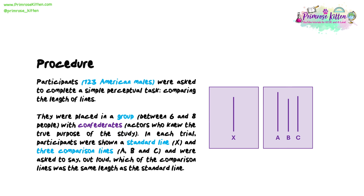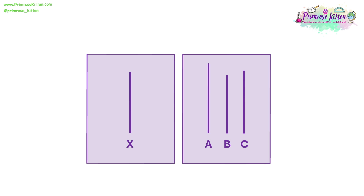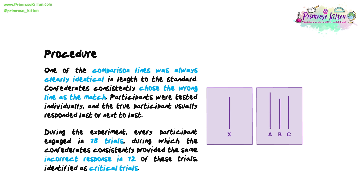and were asked to say out loud which of the comparison lines was the same length as the standard line. We can see here examples of the two cards that the participants were shown — on the left, X, the standard line, and on the second card shown here on the right-hand side, the three comparison lines A, B and C. Hopefully you can see that it's very clear which of the comparison lines matches the standard line. One of the comparison lines was always clearly identical in length to the standard. Confederates consistently chose the wrong line as the match.